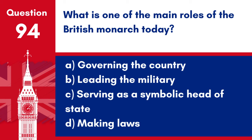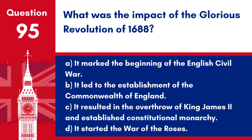Question 94. What is one of the main roles of the British monarch today? a. Governing the country. b. Leading the military. c. Serving as a symbolic head of state. d. Making laws. Answer: c. Serving as a symbolic head of state. Today, the British monarch serves primarily as a symbolic head of state, embodying continuity and national identity.